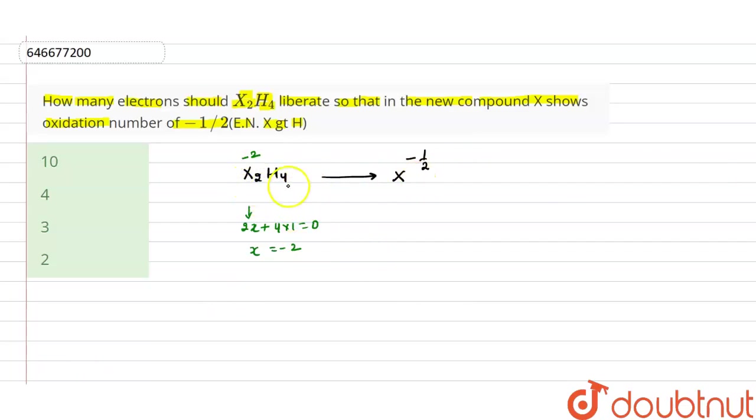We have to find the change in oxidation number. So the change will be minus 1/2 minus (minus 2), which equals 3/2. So that means